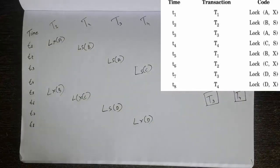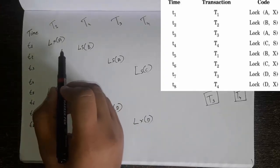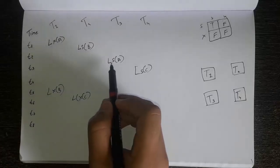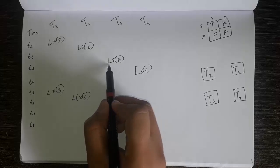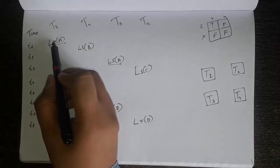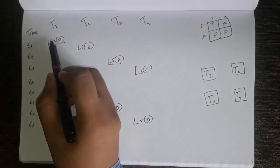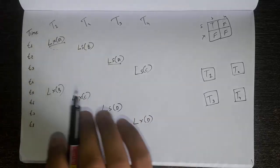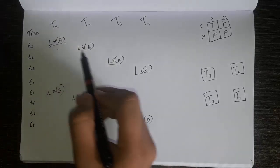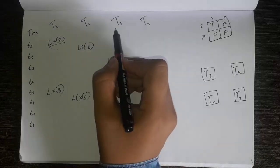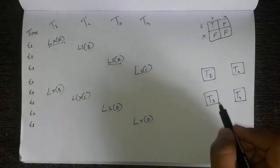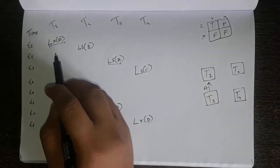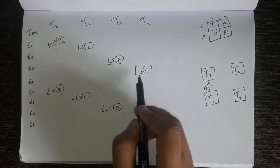Now we will find if there is any deadlock. The first transaction is Lock-X(A). Moving to the third transaction, we have Lock-S(A). Since one is X and the other is S, from our table X and S is false — they are incompatible. So T3 is blocking T1, because T3 holds a lock on resource A. Then we move to the next transaction T4, which is Lock-S(C) — there is no conflict with S(C) here.